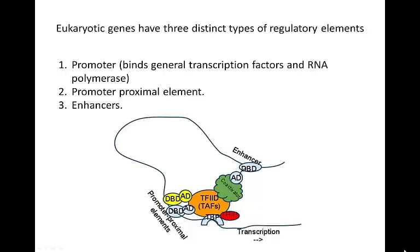There are three different kinds of regulatory elements that most eukaryotic genes have. First, the promoter — we've talked about this already. This is the TATA box, where TBP binds and RNA polymerase will bind, right next to the plus one site where transcription will begin.